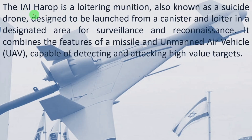The Israel Aeronautical Industry developed HAROP, a loitering munition also known as a suicide drone, designed to be launched from a canister and loiter in a designated area for surveillance and reconnaissance. It combines the features of a missile and an unmanned aerial vehicle (UAV) — it can be launched at a particular target to destroy it and also be controlled as an aerial vehicle.